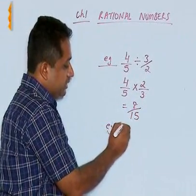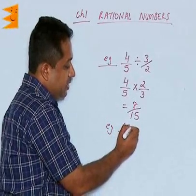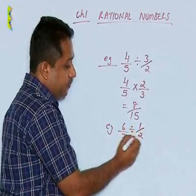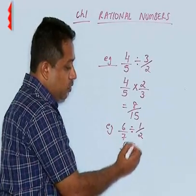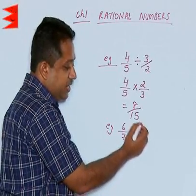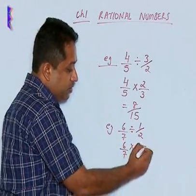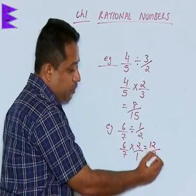We would have another example, let us say 6 by 7 divided by 1 upon 2. Again, there is a division sign. So this is 6 by 7 into, we will take the reciprocal of the second rational number, which becomes 2 by 1. So the answer is going to be 12 upon 7.